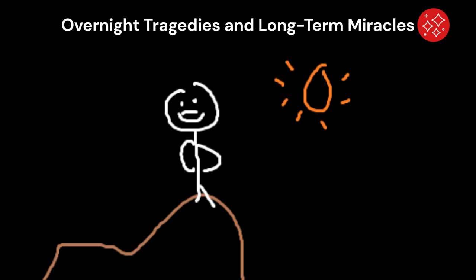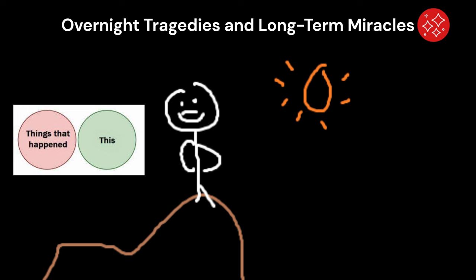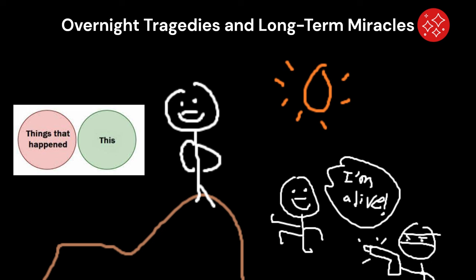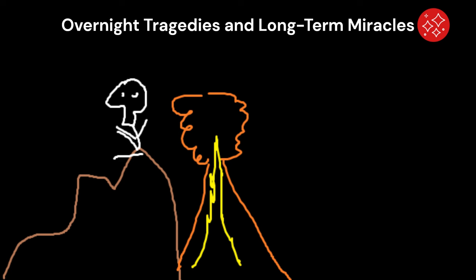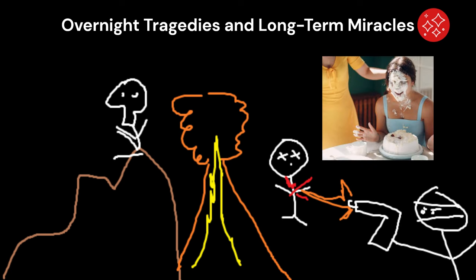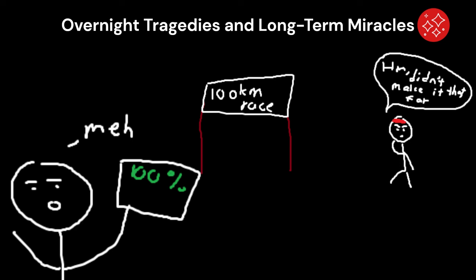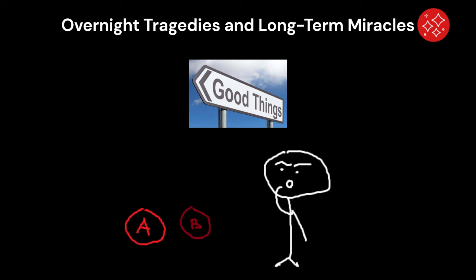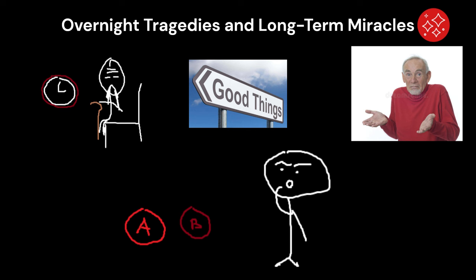Two things to note is that the good things are often the ones that didn't happen. A death that didn't occur. A weapon not fired. The bad is always shoved up in your face. It's the death that happened and the weapon that was fired. We have to realize that the good things are often unnoticeable because they take so long to happen or they are the bad things that never occurred at all.